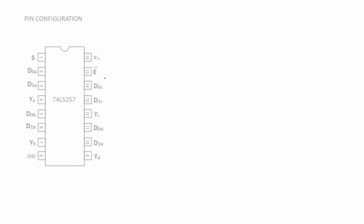First let us look at the pin configuration. This is a 16-pin IC with pin number 16 connected to VCC and pin number 8 connected to ground. Pin number 1 is the select line and pin number 15 is an active low enable input connected to each of the 4 multiplexers.